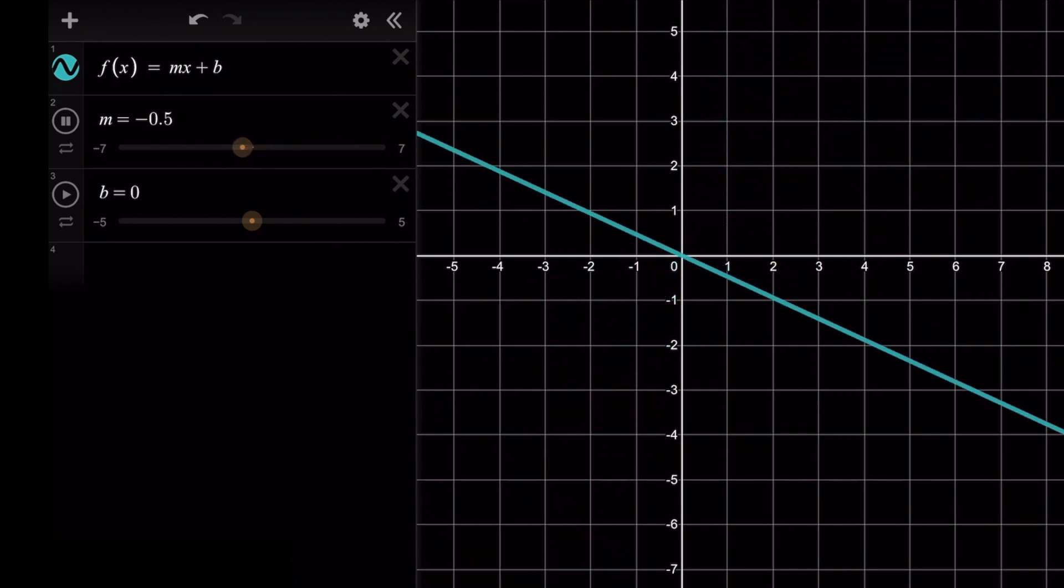Then as we get a negative slope, you'll see that the line changes to be decreasing. So now our orientation has changed so that the function is going downhill, we have a negative slope, so we're going down.